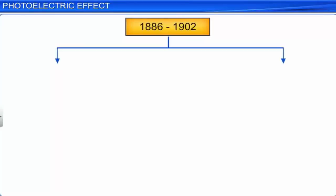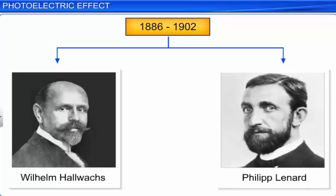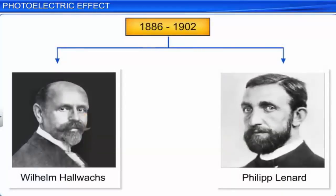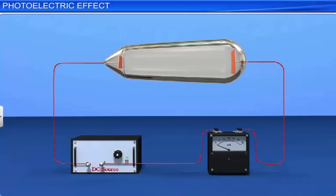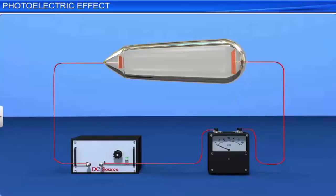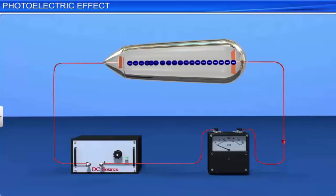During the period 1886 to 1902, two physicists, Wilhelm Hallwachs and Philip Lenard, carried out a thorough investigation of the photoelectric effect phenomenon. Lenard conducted an experiment in which he placed two electrodes — an emitter or cathode, and a collector plate — inside an evacuated glass tube. He connected the collector plate to the cathode by a wire, through a sensitive ammeter to measure any current in the circuit. He then allowed ultraviolet radiation to fall on the cathode. As soon as the ultraviolet radiation fell on the cathode, a current flowed in the circuit, which was measured by the ammeter.